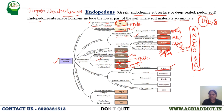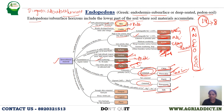Petrocalcic means calcium accumulation plus hardening, i.e., cementation. Gypsic means gypsum accumulation; petrogypsic means cemented gypsum. Salic means accumulation of soluble salts — chlorides and sulfates of alkaline and alkaline earth metals like sodium, potassium, calcium, and magnesium.